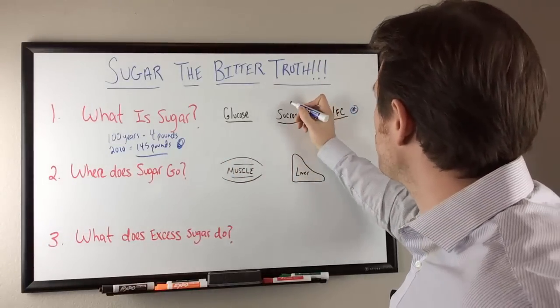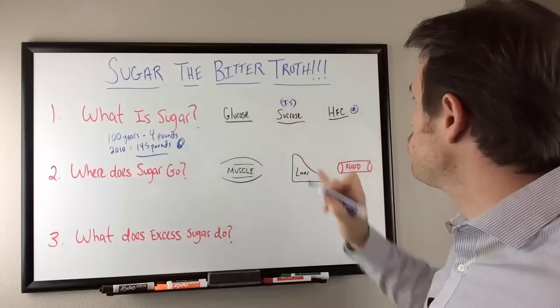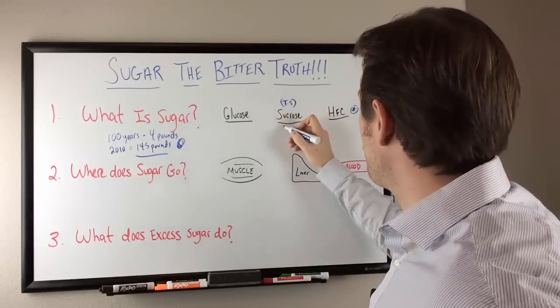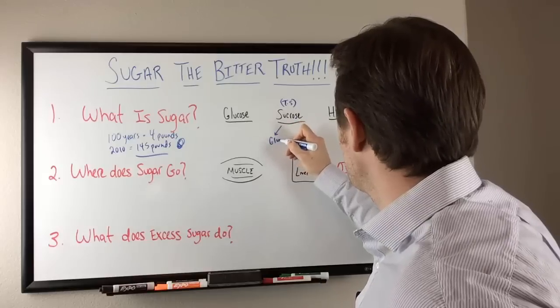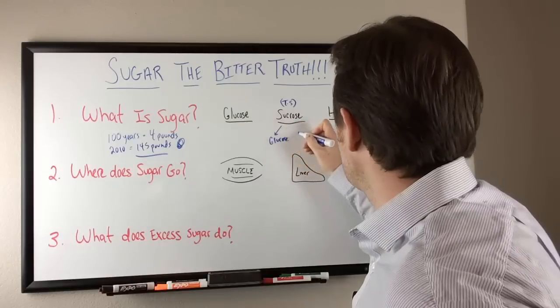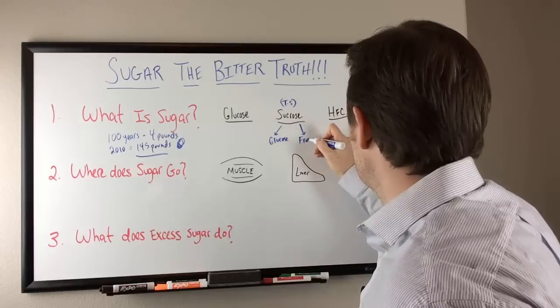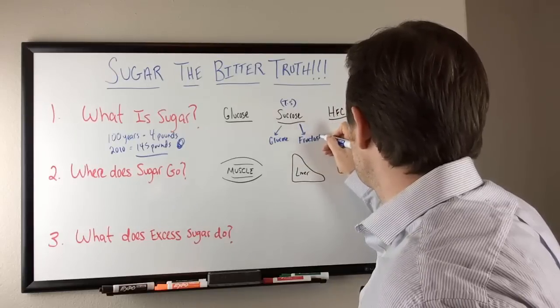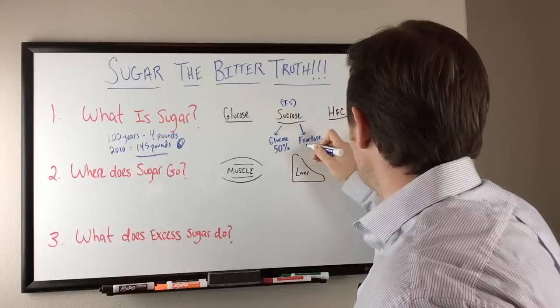We have sucrose. Sucrose is table sugar. Sucrose essentially gets broken down in the body to 50-50 glucose and fructose. So we have 50% glucose, 50% fructose, just so you get an idea of what's in your sugar.